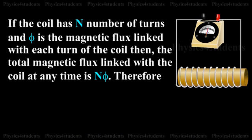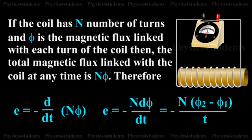If the coil has N number of turns and phi is the magnetic flux linked with each turn of the coil, then the total magnetic flux linked with the coil at any time is N phi. Therefore, E equals minus d by dt into N phi, which equals minus N d phi by dt. That is equal to minus N into phi2 minus phi1 by t.